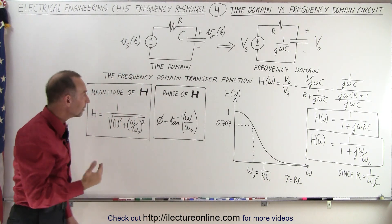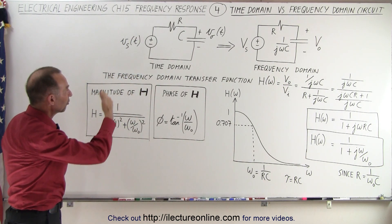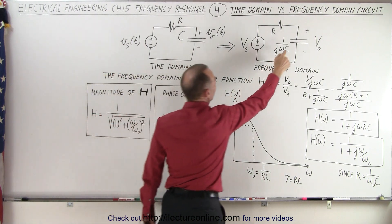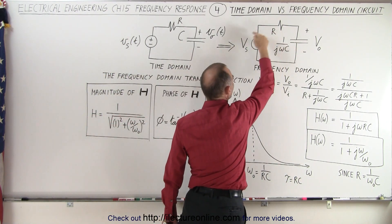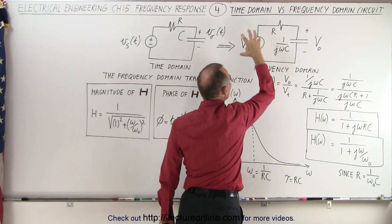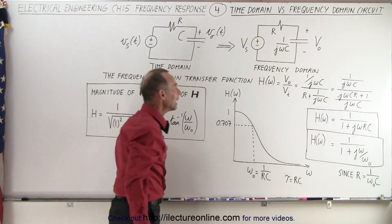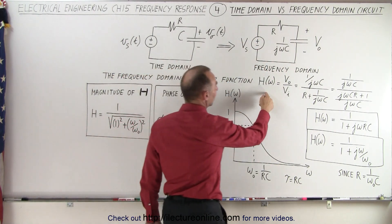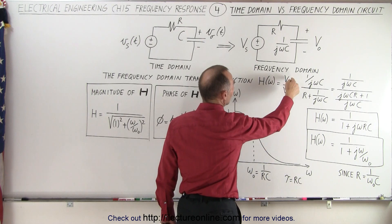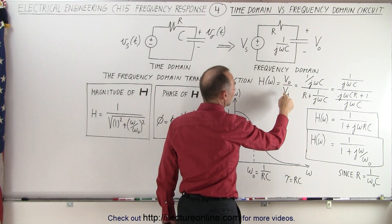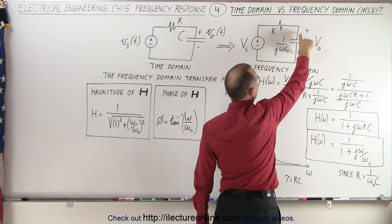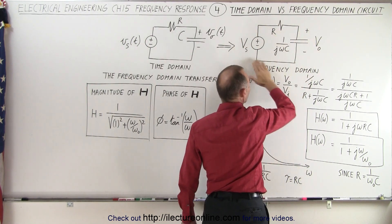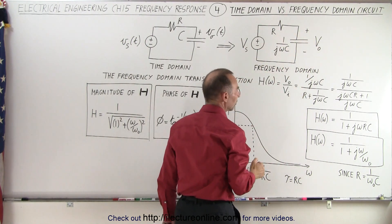When we calculate the transfer function in this particular instance, where we have a capacitor and a resistor connected to an input voltage, we calculate the transfer function by realizing it's going to be the ratio of the output voltage over the input voltage. The output voltage is across the capacitor, and the input voltage is across the whole circuit — the resistor and the capacitor.